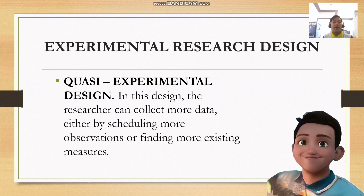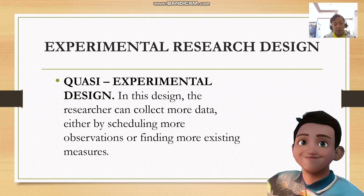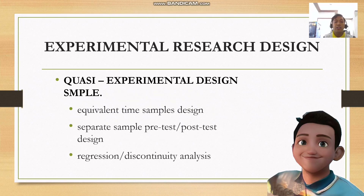The next one is the quasi-experimental design. In this design, the researcher can collect more data either by scheduling more observations or finding more existing measures. Quasi-experimental design involves selecting groups upon which a variable is tested without any random pre-selection process. Unlike pre-experimental design which involves one group, quasi-experimental design involves two or more groups. Examples include the equivalent time sample design, the separate sample pre-test, post-test design, and the regression discontinuity analysis.